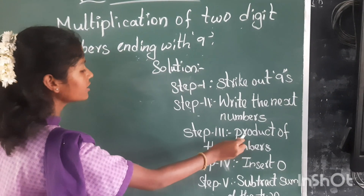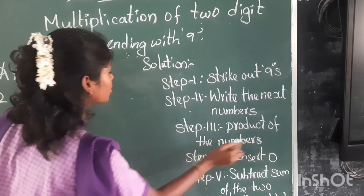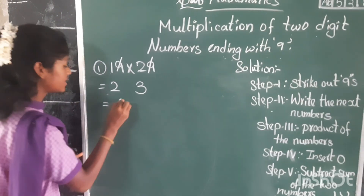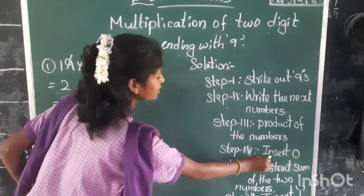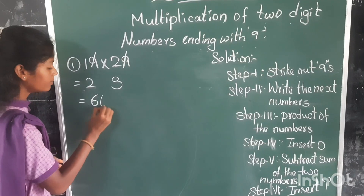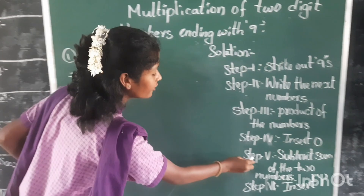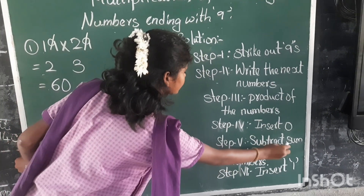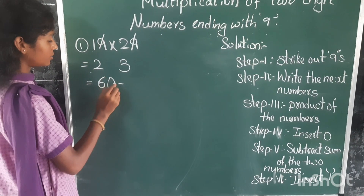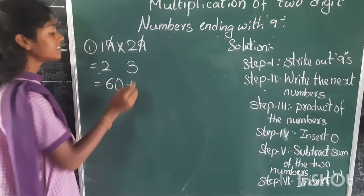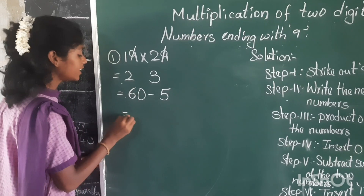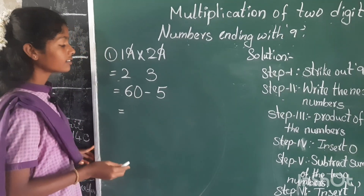The third step is we need to write the products of these two numbers. What is the product of these two numbers? 6. The fourth step is insert 0 — we need to insert 0 for this. The fifth step: we need to subtract these two with the sum of these two. What is the sum of these two numbers? 5. What is the product? Answer: 55.